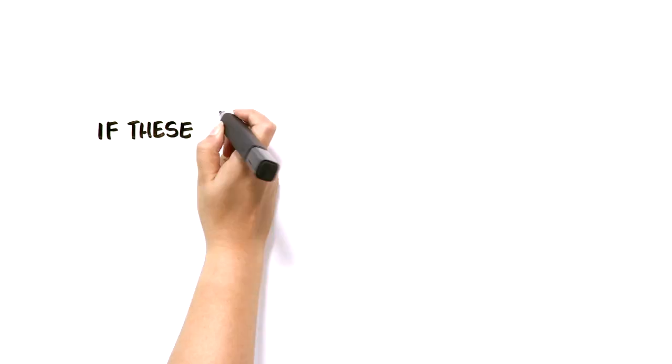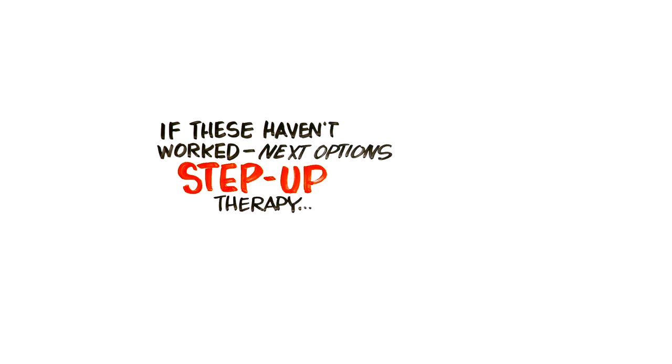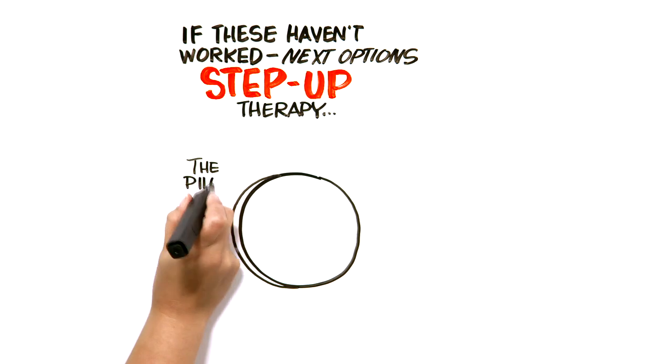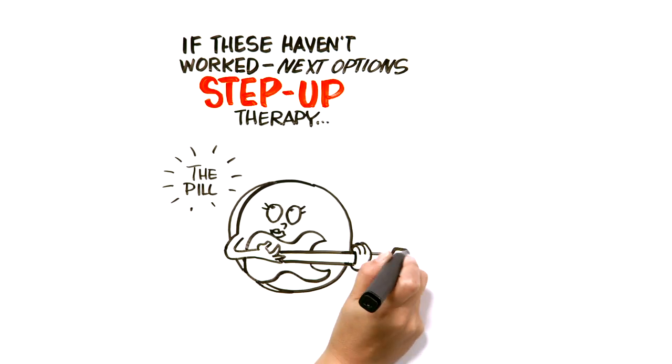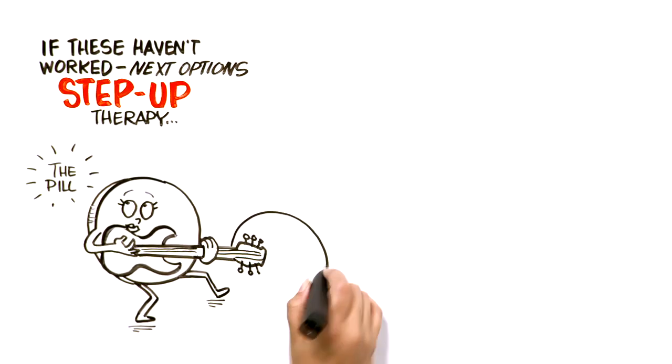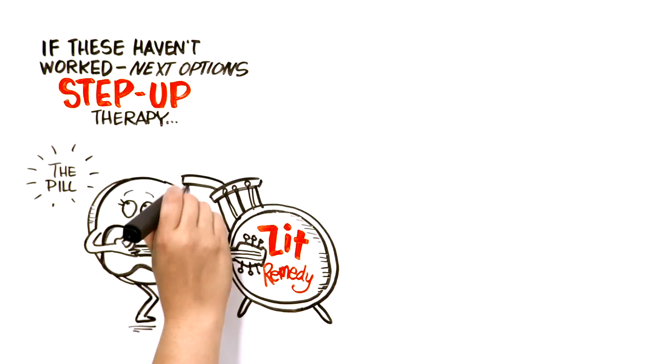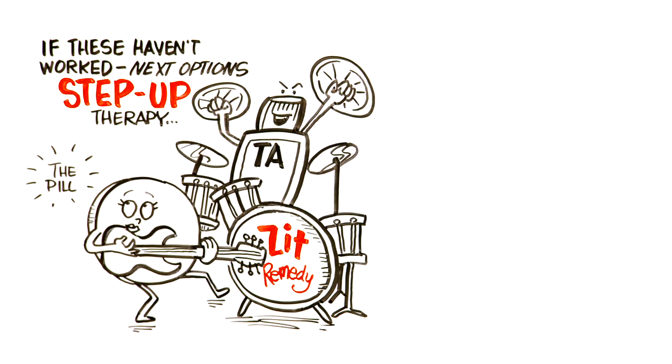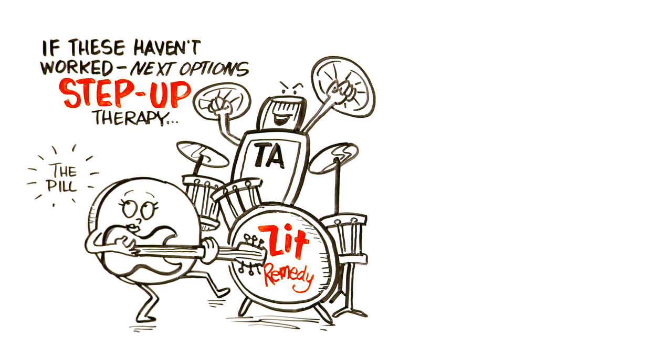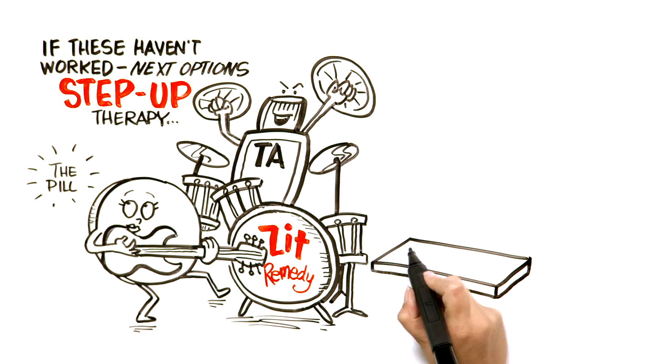Okay, if these first line agents haven't worked, it's time to look at the next options for step-up therapy. If you're a woman, you can consider using a birth control pill as it reduces the hormones that cause plugging in the first place. This is an especially effective approach if you tend to have flare-ups of acne around your period. You can also consider a topical antibiotic to reduce P acnes and inflammation. These can be prescribed pre-mixed with BP or a retinoid if you already know you tolerate these.